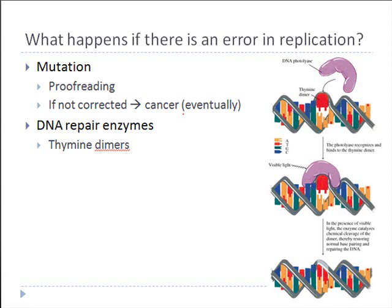What happens if DNA polymerase is moving along, copying DNA, pairing A's with T's and C's with G's, and it accidentally pairs an A with a C? If that happens, you have what's called a mutation. Any time you get a mis-pairing of nucleotides, that is a mutation.